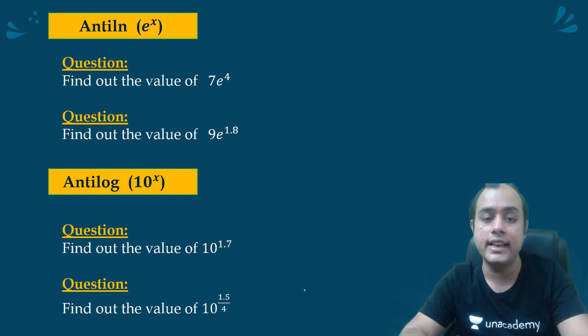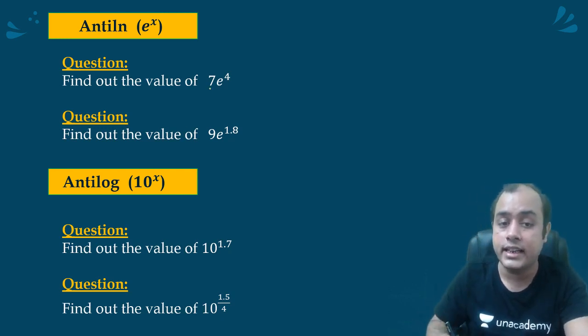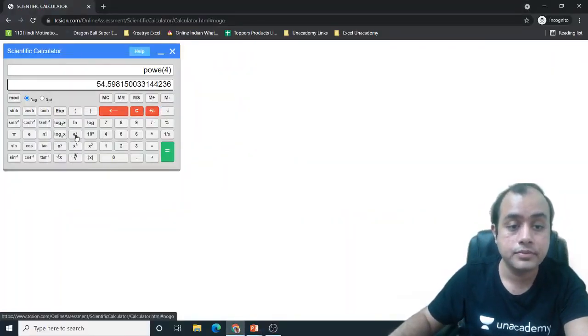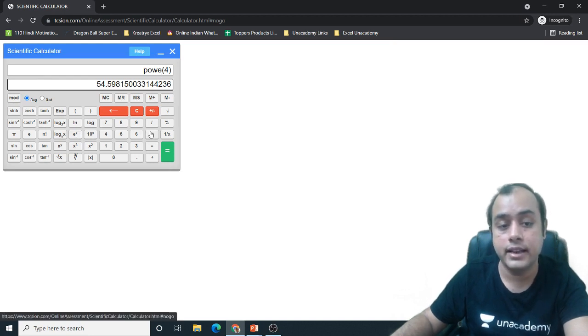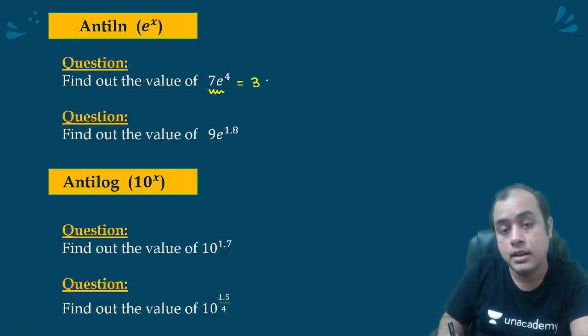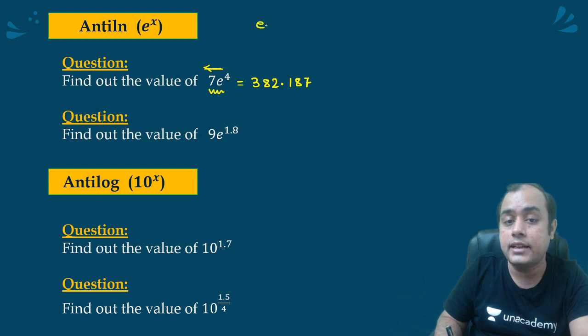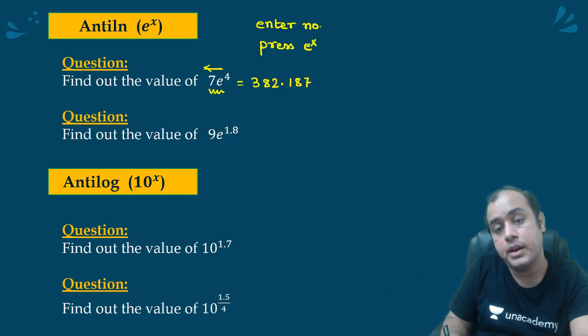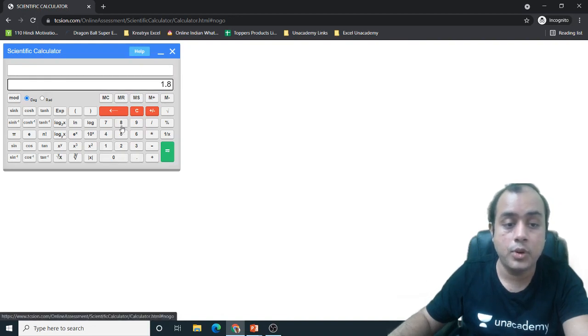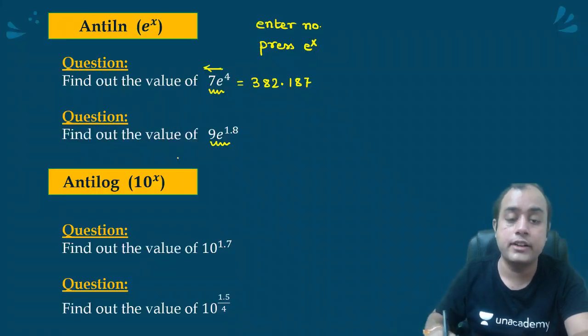What about natural log e to the power x? Suppose the first thing I need to evaluate 7e^4. See, very easy. You will first put 4, then you will press e to the power x into 7. See, 382.187. So here guys, again go from right to left. Enter number, press e to the power x. 9e to the power 1.8. 1.8 e to the power multiply by 9. 54.4468.